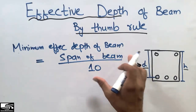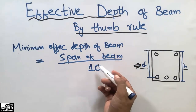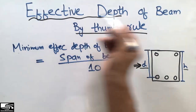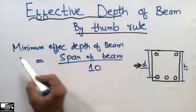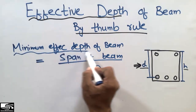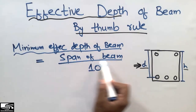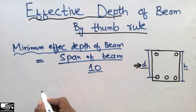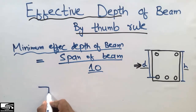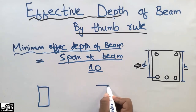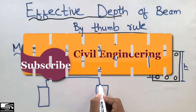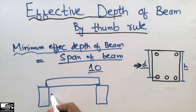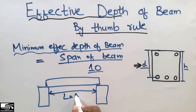This shortcut formula is known as the thumb rule for the effective depth of beam — how we find the effective depth by a shortcut method. It states that the minimum effective depth for a beam should be the span of the beam divided by 10. Let's take an example: here we have two columns, and the beam is supported by these two columns. This is the span of the beam, L.